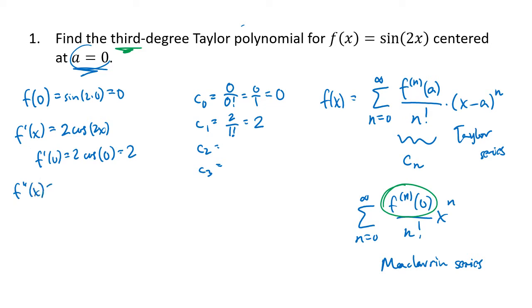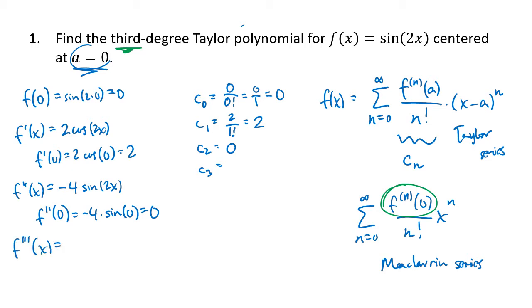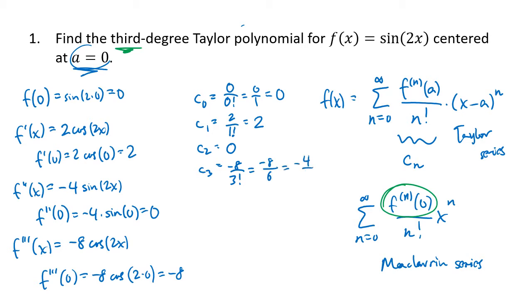For c2 we need the second derivative. The derivative of 2cos(2x) is −4sin(2x) — each derivative brings an extra factor of 2 by the chain rule. Plugging in 0 gives −4·sin(0) = 0, so c2 = 0. For c3, the third derivative is −8cos(2x). Plugging in 0 gives −8·cos(0) = −8, so c3 = −8/3! = −8/6 = −4/3.